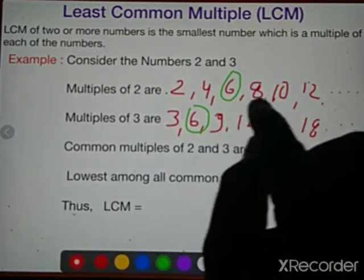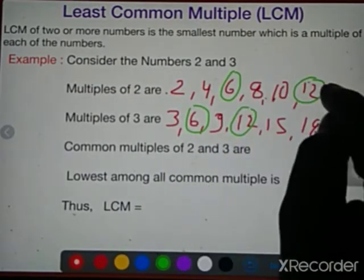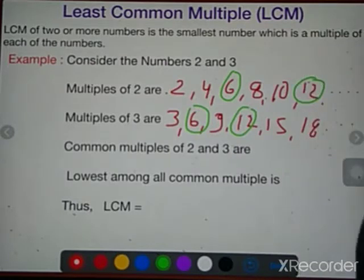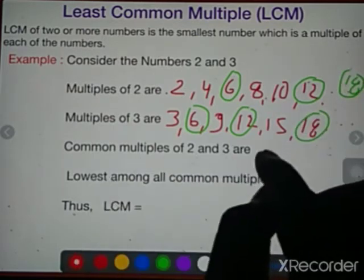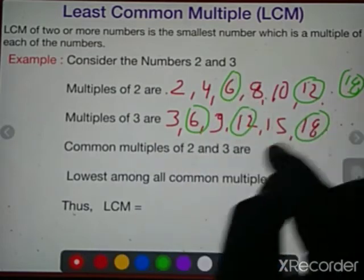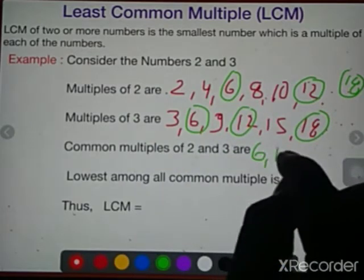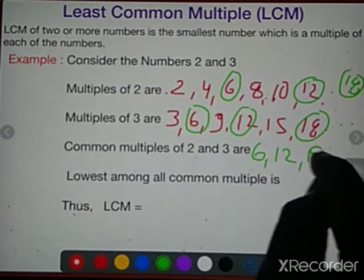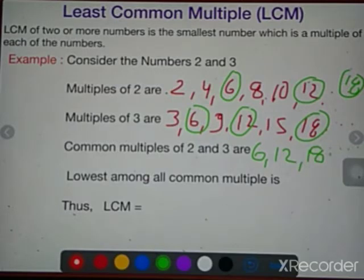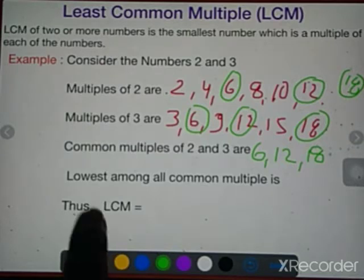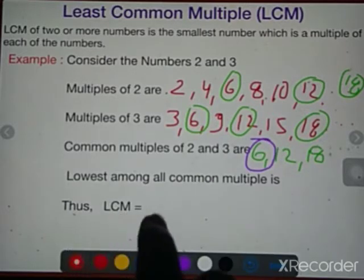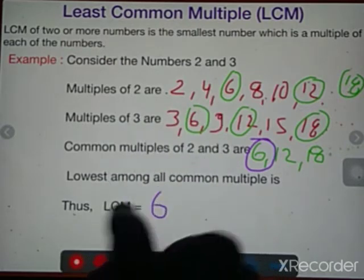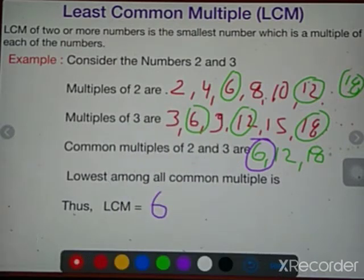The common multiples of 2 and 3 are: 6, 12, 18, and so on — there are infinite common multiples. The smallest common multiple — 'subse chota' — among all common multiples is 6. So the LCM of 2 and 3 is 6. This method is called the Listing Method.